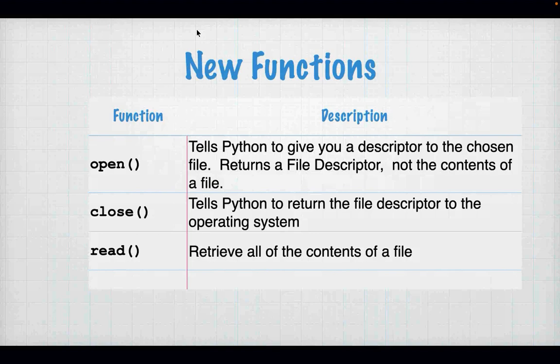We have some new functions. We have `open`, which tells Python to get a file descriptor — not the contents of the file, but the descriptor of the file. `close` returns the file descriptor to the operating system. And `read` retrieves all the contents of a file.